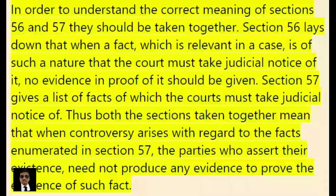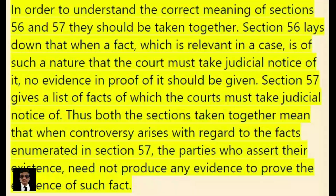In order to understand the correct meaning of Sections 56 and 57, they should be taken together. Section 56 lays down that when a fact which is relevant in a case is of such a nature that the court must take judicial notice of it, no evidence in proof of it should be given. Section 57 gives a list of facts of which the courts must take judicial notice. Thus both sections taken together mean that when controversy arises with regard to the facts enumerated in Section 57, the parties who assert their existence need not produce any evidence to prove the existence of such facts.